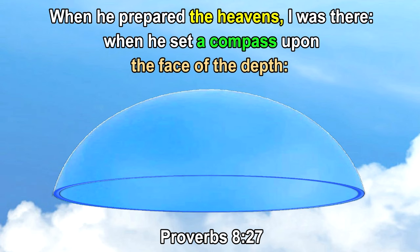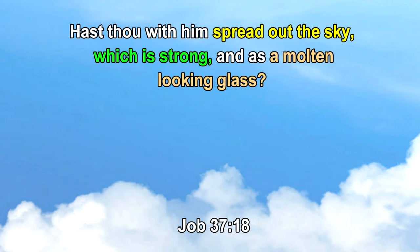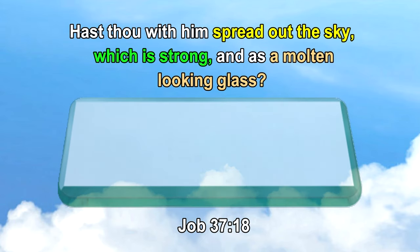Scripture says: hast thou with him spread out the sky which is strong, and is a molten looking glass? Spread out means to mash down flat, or to stamp down, and to push or pull across a surface. This ingredient must be super strong at its completion, yet flexible during the forming stage. And that material would have the consistency of molten glass, hot lava rocks, or liquid magma, that would come to be formed and polished to a shining glass dome, spread out to cover a certain area of space.